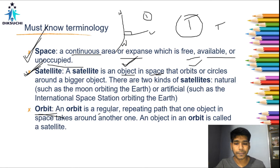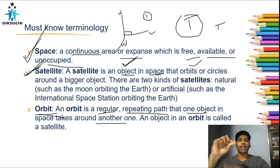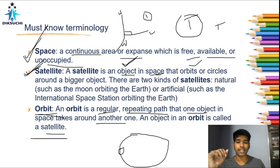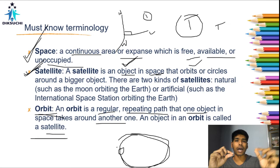The next important terminology is orbit. An orbit is a regular, repeating path that one object in space takes around another. An object in an orbit is called a satellite. The orbit is a defined path in which an object rotates or revolves around a larger object.